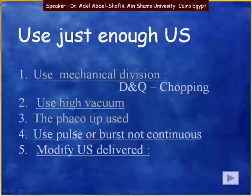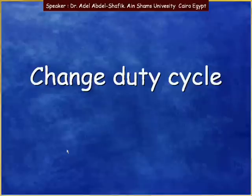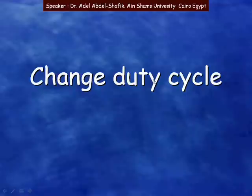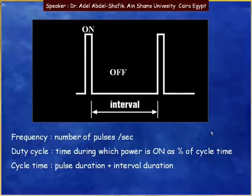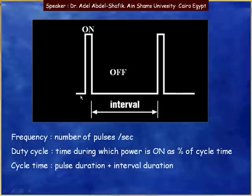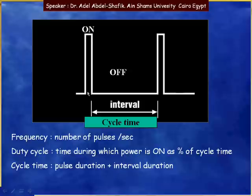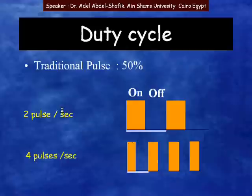We can also use pulses or bursts rather than continuous ultrasound, which delivers less total energy. Lastly, we can modify the ultrasound by changing the duty cycle. The frequency means the number of pulses per second. The duty cycle is the time during which power is on, expressed as a percentage of the cycle time. The cycle time is the duration of a pulse plus the duration of the interval between one pulse and the next — the on part and the off part together.